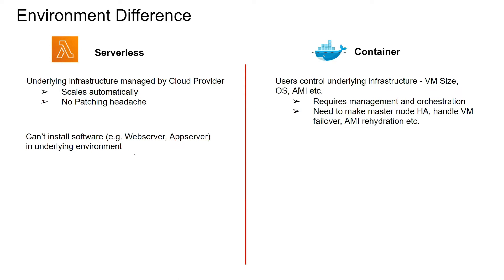In the serverless environment, you cannot install any software such as a web server or app server, because the underlying infrastructure is managed by the cloud provider. However, code libraries can be installed. For example, if you have a Lambda written in Python that requires libraries like a Twitter API or scikit-learn for machine learning, you can package those libraries with the Lambda zip file.